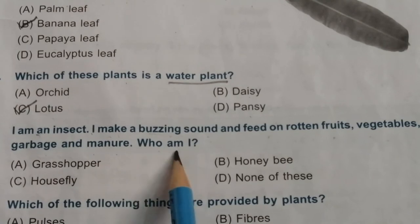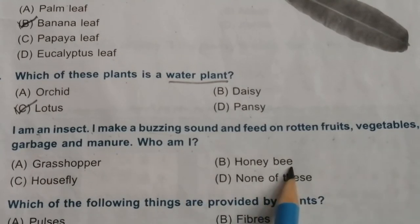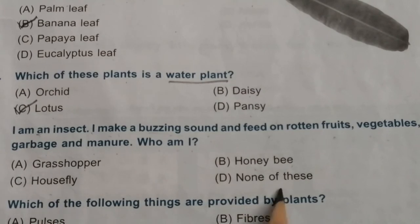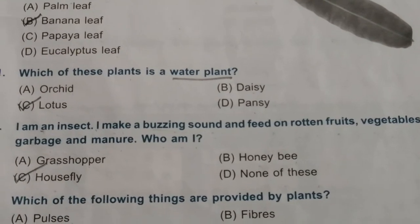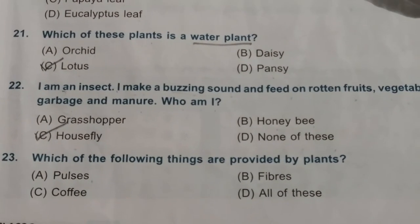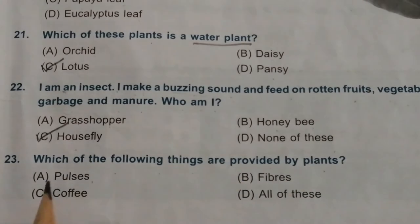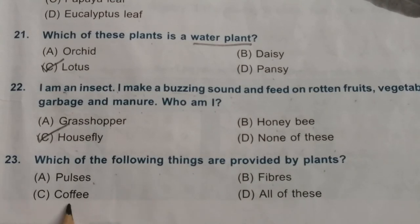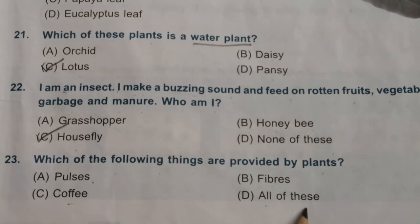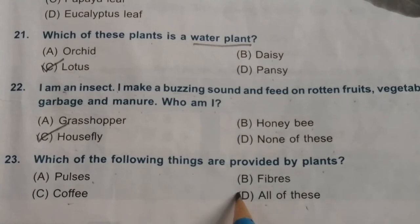The options are grasshopper, honeybee, housefly, or none of these. The answer is housefly. Twenty-third question: which of the following things are provided by plants — pulses, fibers, coffee, or all of these? The answer is all of these.